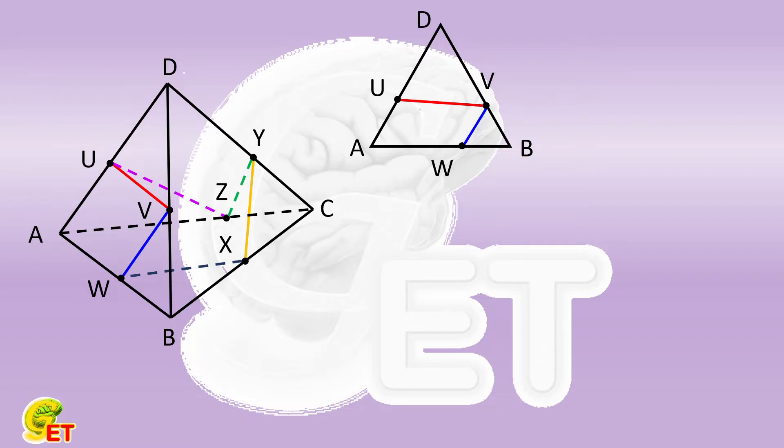In the following, we find point X on side BC of triangle ABC. Find point Y on side CD of triangle BCD. Find point Z on side AC of triangle ACD. Finally get back to point U on side AD.